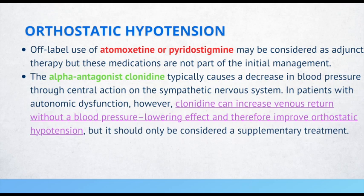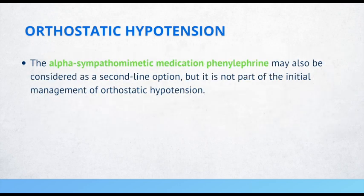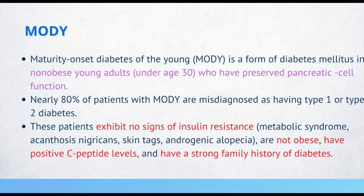Maturity-onset diabetes of the young (MODY) is a form of diabetes in non-obese young adults under the age of 30 who have preserved pancreatic beta cell function. Nearly 80% of patients with MODY are misdiagnosed as having type 1 or type 2 diabetes. These patients exhibit no signs of insulin resistance such as metabolic syndrome, acanthosis nigricans, skin tags, or androgenic alopecia, and they are not obese.